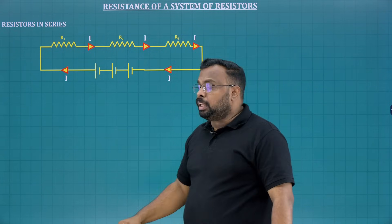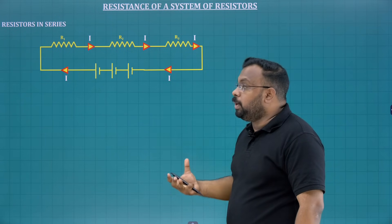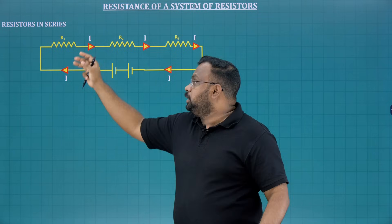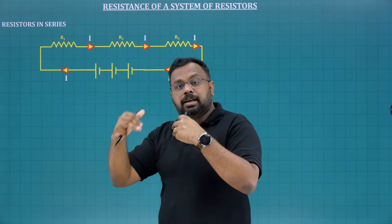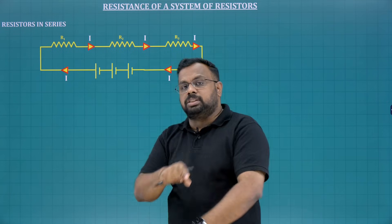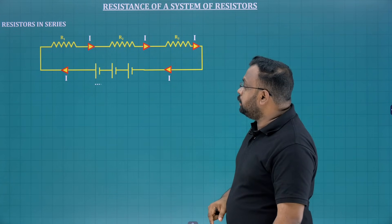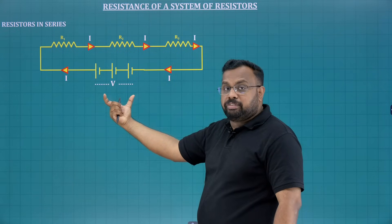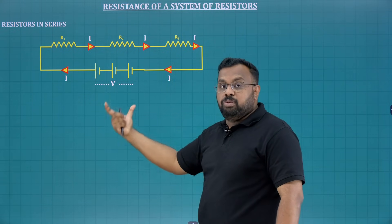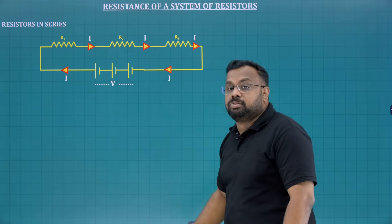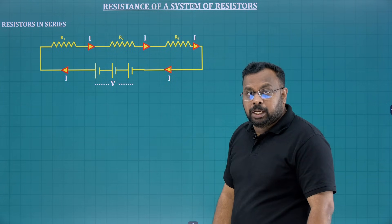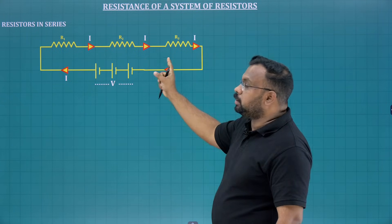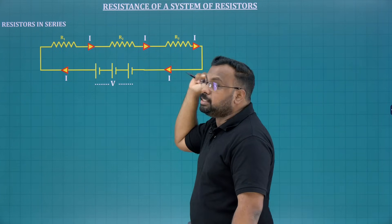So I is the current flowing through this. Our aim is to find what the total resistance will be — that is the question. If this is 10, this is 20, this is 30 — if you connect them like this, what will be the total resistance of the circuit? For that, let us take the potential difference of the battery as V. V is the applied voltage. R1, R2, R3 are connected in series and the current is same. But since the resistances are different, the voltage across these three resistors will be different.